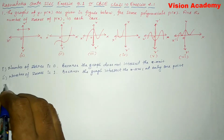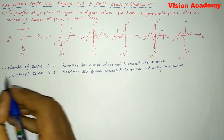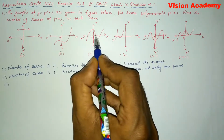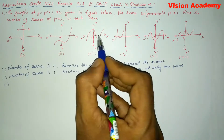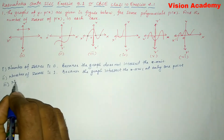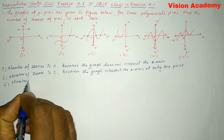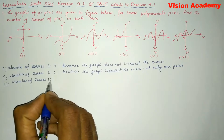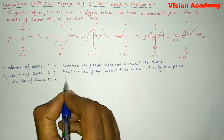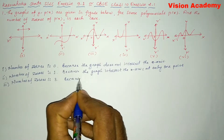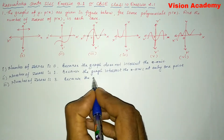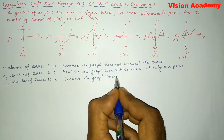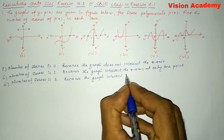Now let us move on to Roman number 3. Here you can see it is intersecting at points 1, 2, and 3. So we can write the number of zeros is 3, because the graph intersects the x-axis at three points.